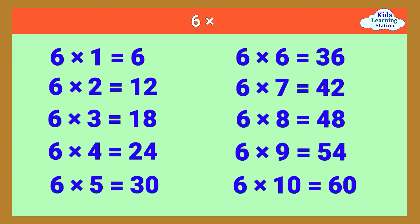Six times table. Six times one equals six. Six times two equals twelve. Six times three equals eighteen. Six times four equals twenty-four. Six times five equals thirty. Six times six equals thirty-six. Six times seven equals forty-two.